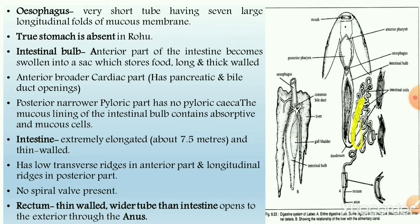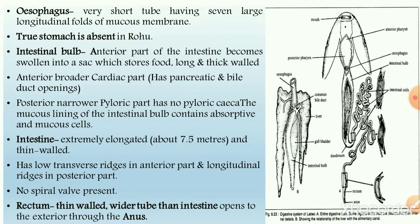The intestinal bulb leads into the intestine region, which is highly elongated with thin walls. Its length can be up to 7.5 meters because Labeo rohita is a herbivore, and in herbivorous fishes the intestinal length is greater. The anterior region has transverse folds and the posterior region has longitudinal folds. No spiral valve is present in this fish, unlike in chondrichthyes and cartilaginous fishes.